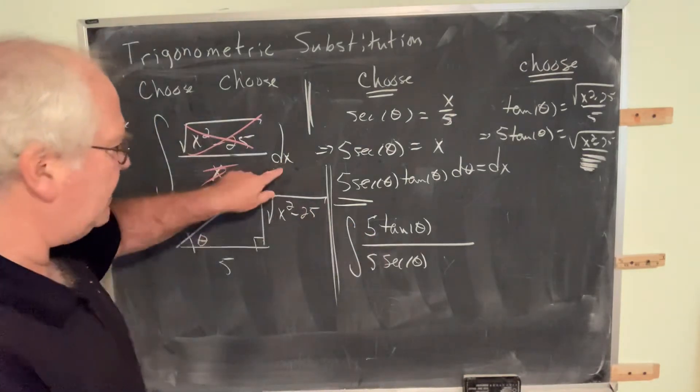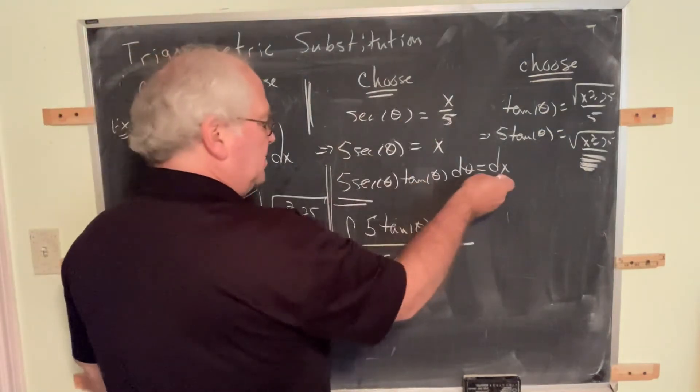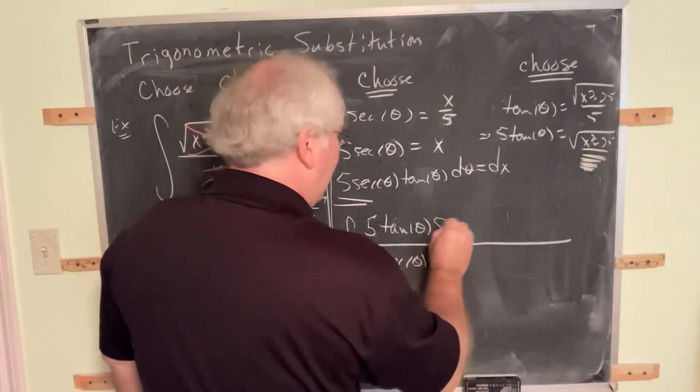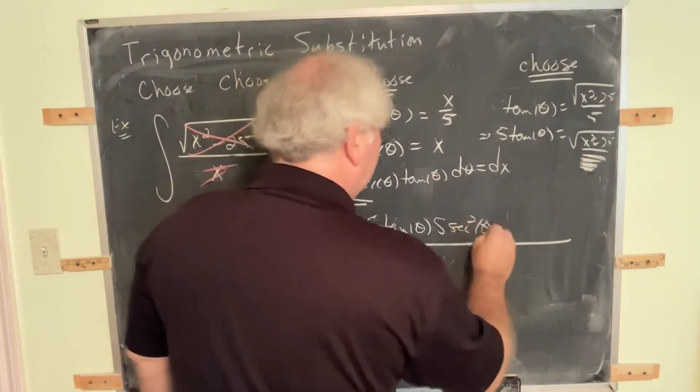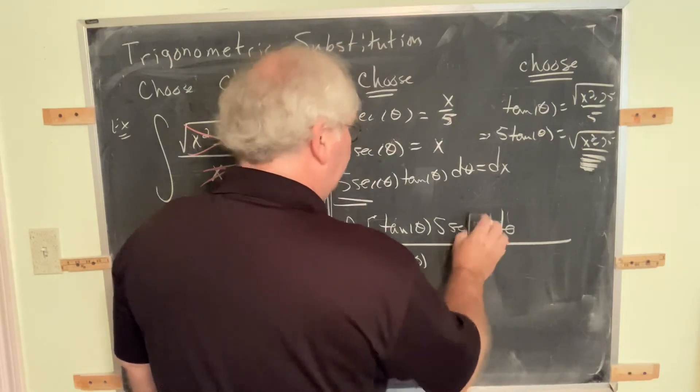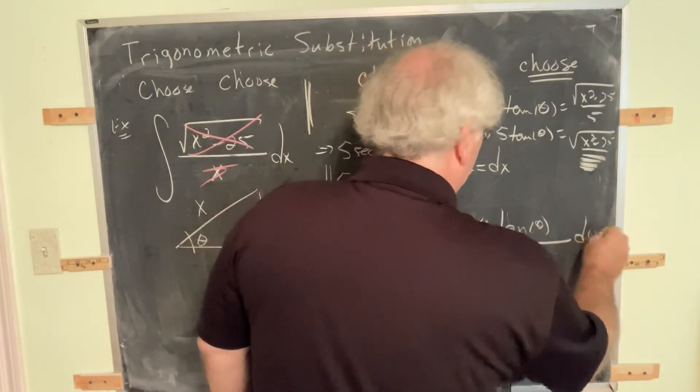This is in the theta language. That needs to be in the theta language also. dx, which is why we did this first column, dx, is this whole great big mess. Five secant theta, tangent, not secant squared. Five secant theta, tangent theta, d theta. Remember that the differential values, the differential is all numerator, except in special kinds of problems.